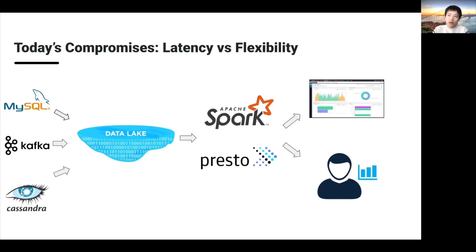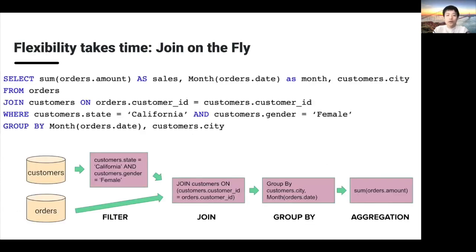Let's take a concrete example. Assume this is an e-commerce business with a dimension table called customers and a fact table called orders. If we want to generate a monthly sales report for all female customers in California, from the raw data side we need to write SQL to join two tables and aggregate the results. The query execution has four phases: first, the table scan phase, which scans all the data from both tables — a full table scan on orders and another full table scan on the customers table.